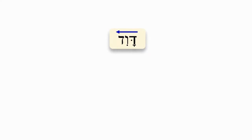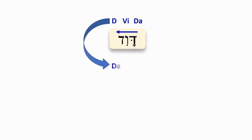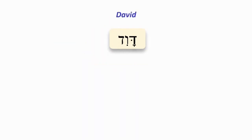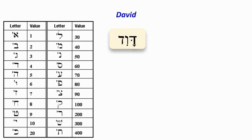The first letter sounds like 'D,' the middle one is different, and the last one is also 'D' — same syllable, same sound as the first. So if you look at it in the regular order, David — we call it David. What's the significance of this name? This chart shows the alphabet of the Hebrew language.